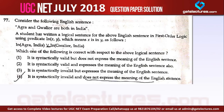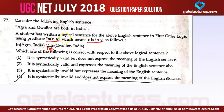Question number 77 is a first order logic question. Consider the English sentence: 'Agra and Gwalior are both in India.' A student has written a logic sentence using the predicate In(x, y), meaning x is in y. The student wrote: In(Agra, India) OR In(Gwalior, India). We can see this is not expressing the correct meaning — the English says 'both,' but the formula says 'or.'